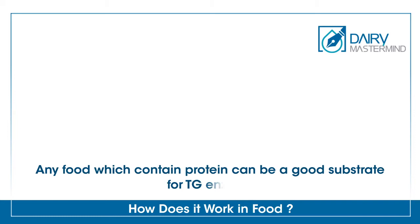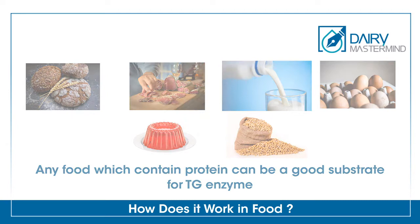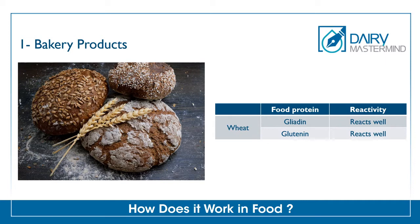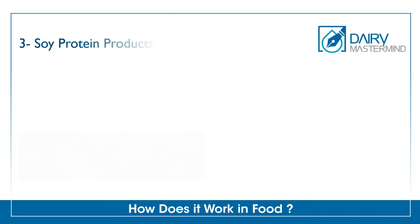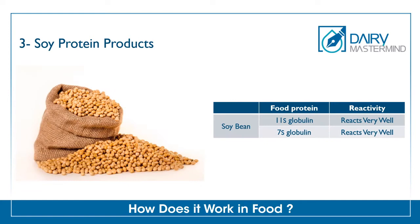Any food which contains protein can be a good substrate for TG enzyme. In bakery products, gliadin and glutenin can react well with TG enzyme. In meat products, gelatin and myosin react very well, and collagen reacts well with TG enzyme. In soy protein products, globulin reacts very well with TG enzyme.